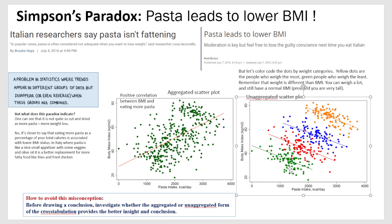There are four group categories shown here — weight categories. The highest weight band is shown in orange, and the lowest weight band is shown in green. When you focus on a specific set of people in a specific weight band, you can see there appears to be a negative correlation: as pasta intake per day goes higher, the BMI goes lower, which is interesting and counterintuitive.